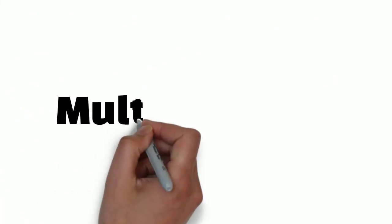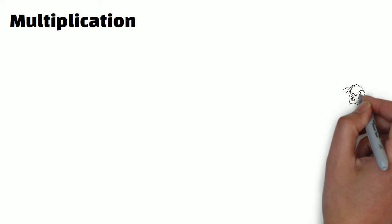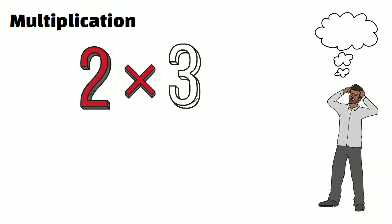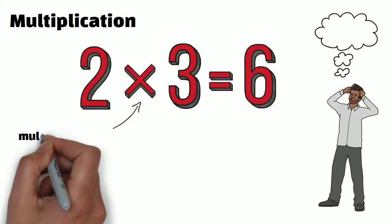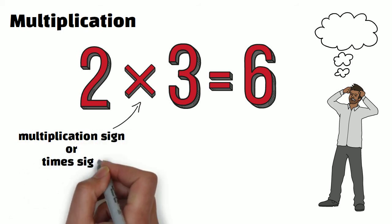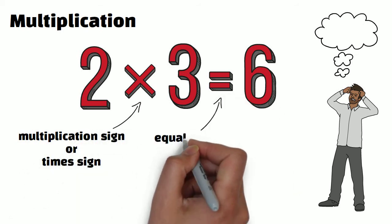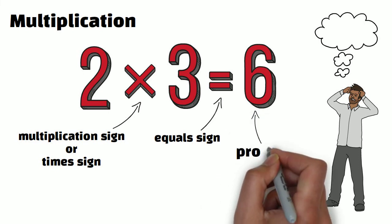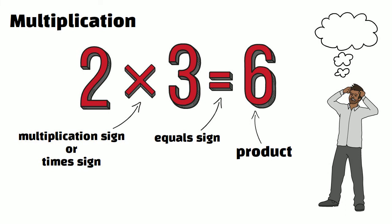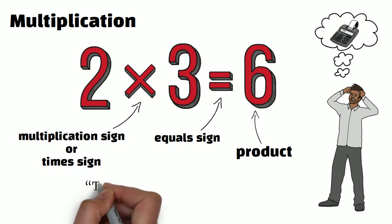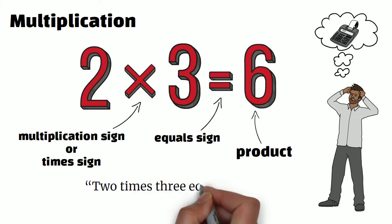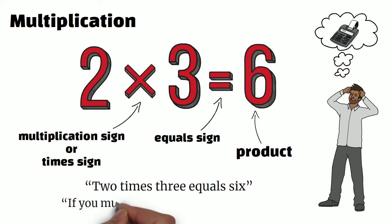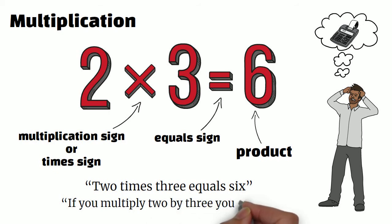Let's now move on to multiplication. The symbols used here are the multiplication sign, or the times sign, and again the equals sign. The result of a multiplication equation is called a product. We read the whole equation like this: '2 times 3 equals 6.' Or if you wanted to explain this to someone, you could say 'if you multiply 2 by 3, you get 6.'